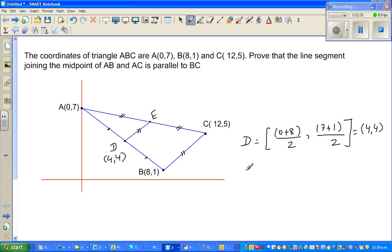Okay, the coordinate of E has the same logic. You add the x-coordinate of A and C, and divide it by 2. So I hope you can understand directly, 0 plus 12 is 12, divided by 2 is 6. And the y-coordinate is the same. 7 plus 5 is again 12, divided by 2 is 6. So E is 6 comma 6.